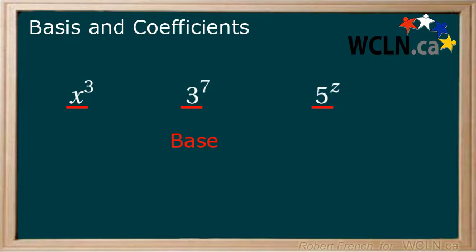Sometimes, though, you'll see an exponent applied to brackets around a combination of numbers and or variables. Here are a few examples.